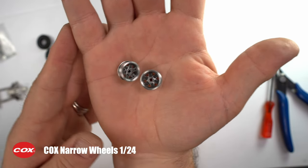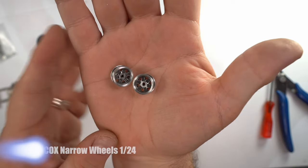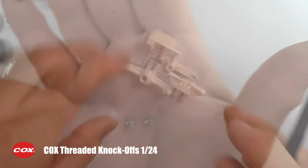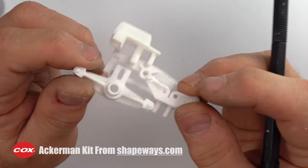Pick up a set of matching Cox narrow wheels, and if you watch till the very end of the video, you'll see how you can use Cox threaded knockoffs on the front as well as the back.